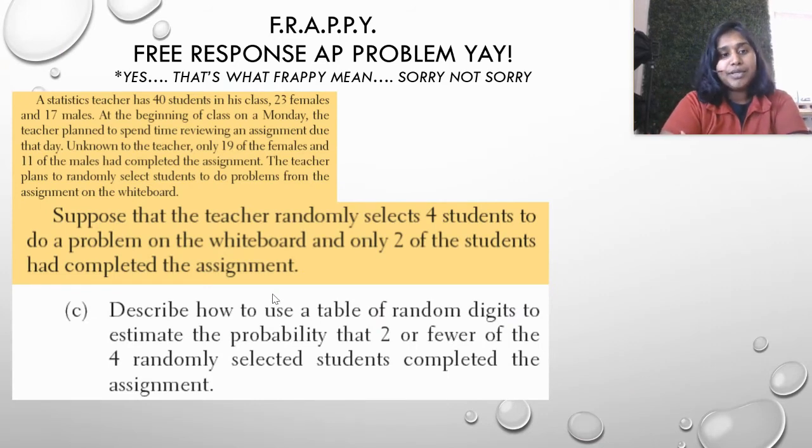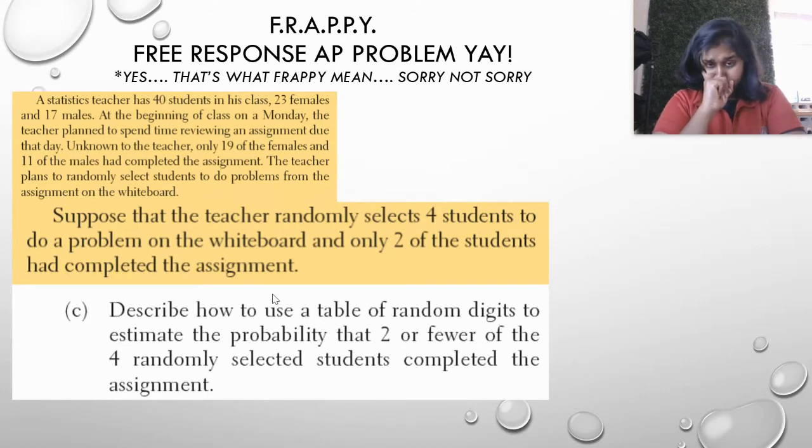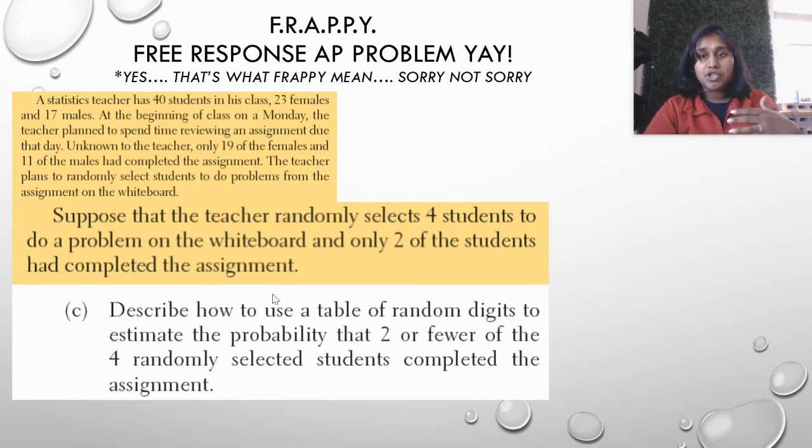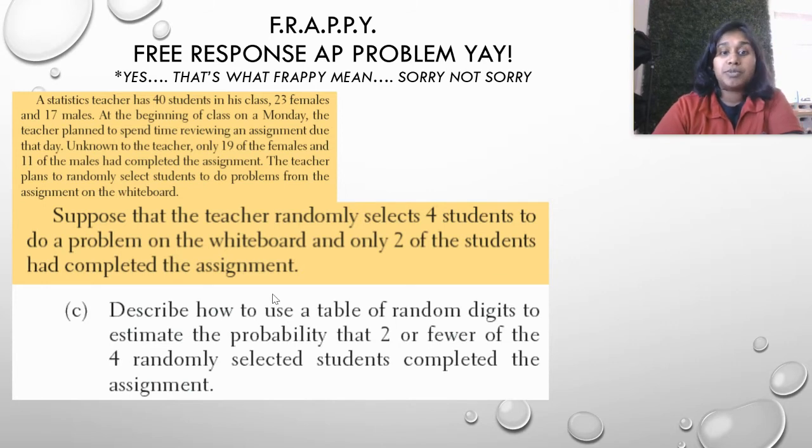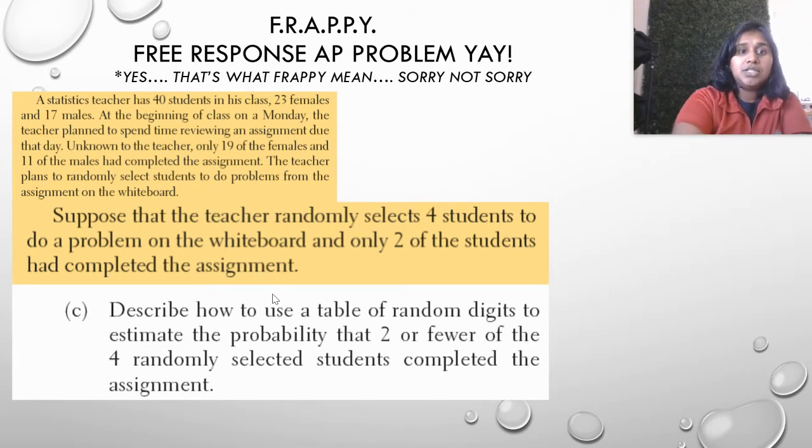The C and D talk about a brand new topic. So there's this new paragraph I'm going to read out. Suppose that the teacher randomly selects four students to do a problem on the whiteboard and only two of the students have completed the assignment. Cool. Describe how to use the table of random digits to estimate the probability that two or fewer of the four randomly selected students completed the assignment. Great. So we're going to use that table of random digits. And there's a QR code for a page. If you're still don't get the table of random digits, it's coming up in just a second. So all they want is a descriptor. So I'm just going to read out the answer because this is literally just set up an assignment problem with table of random digits.